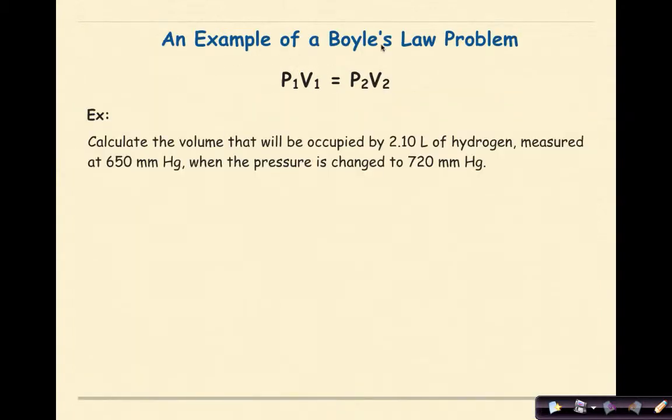Let's look at an example of a Boyle's Law problem. P1V1 is our original pressure and volume, which relates to P2V2, our new pressure and volume. Calculate the volume that will be occupied by 2.10 L of hydrogen measured at 650 mm Hg when the pressure is changed to 720 mm Hg.